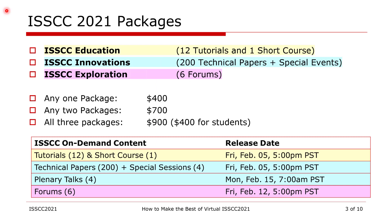Here is a quick summary of what was covered on the previous slide, plus some information on the registration fee for each package and the release dates of the on-demand content. The registration fee is $400 for any one package, $700 for any two packages, and $900 for all three packages, that is, for all content.